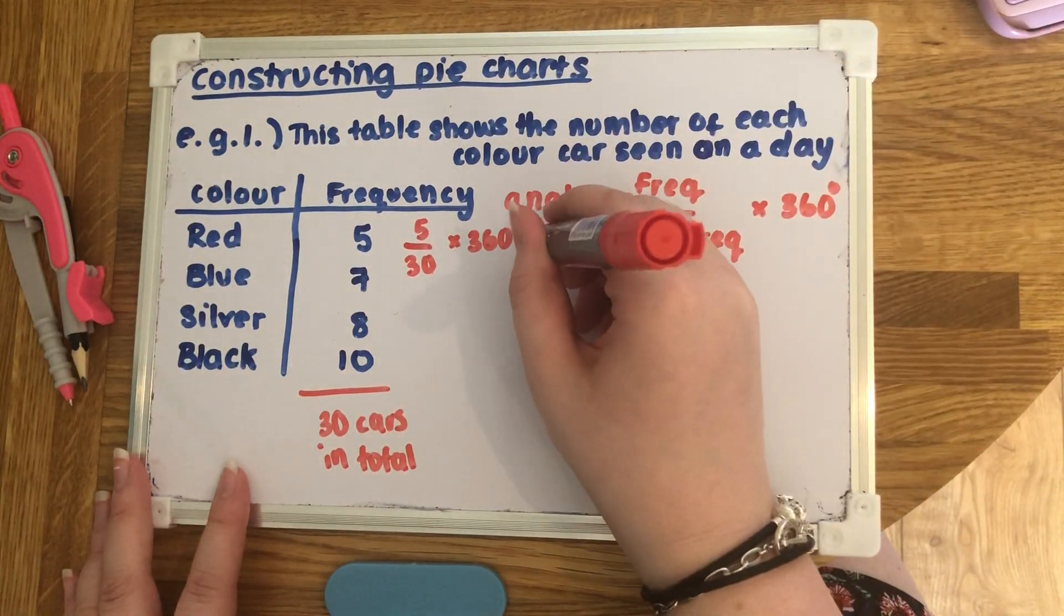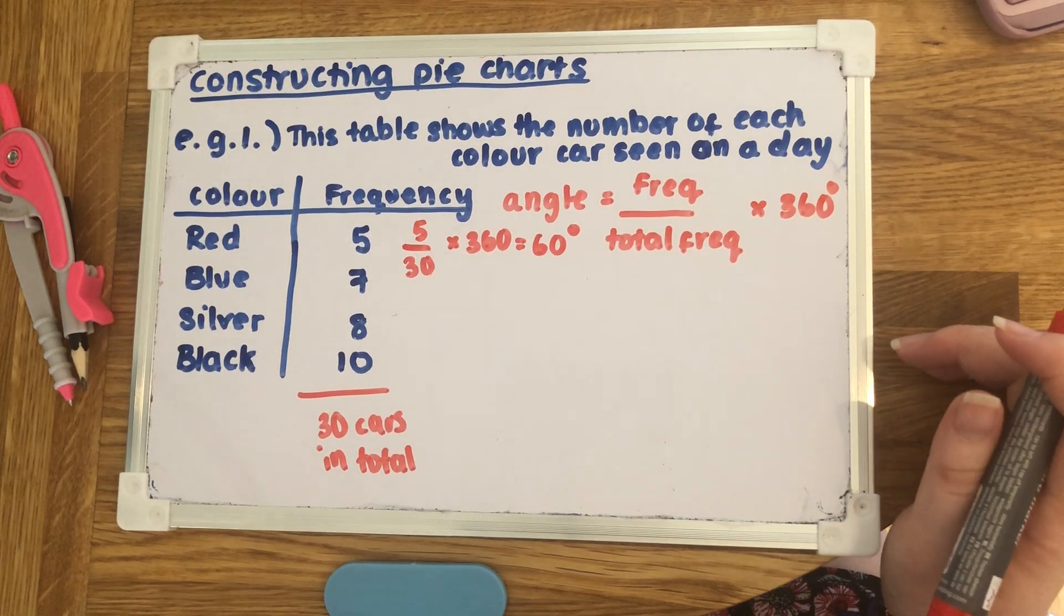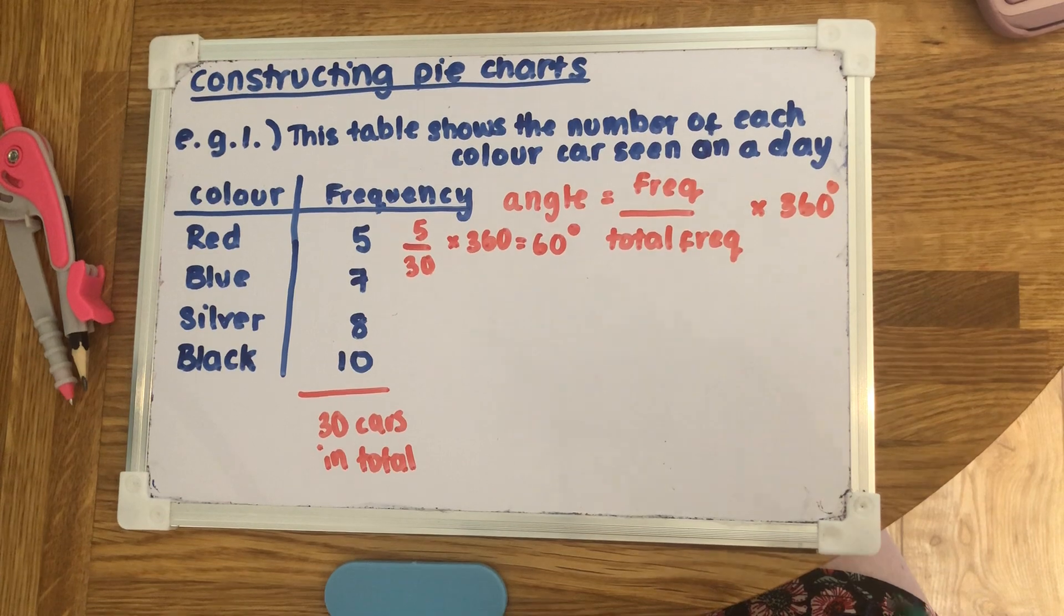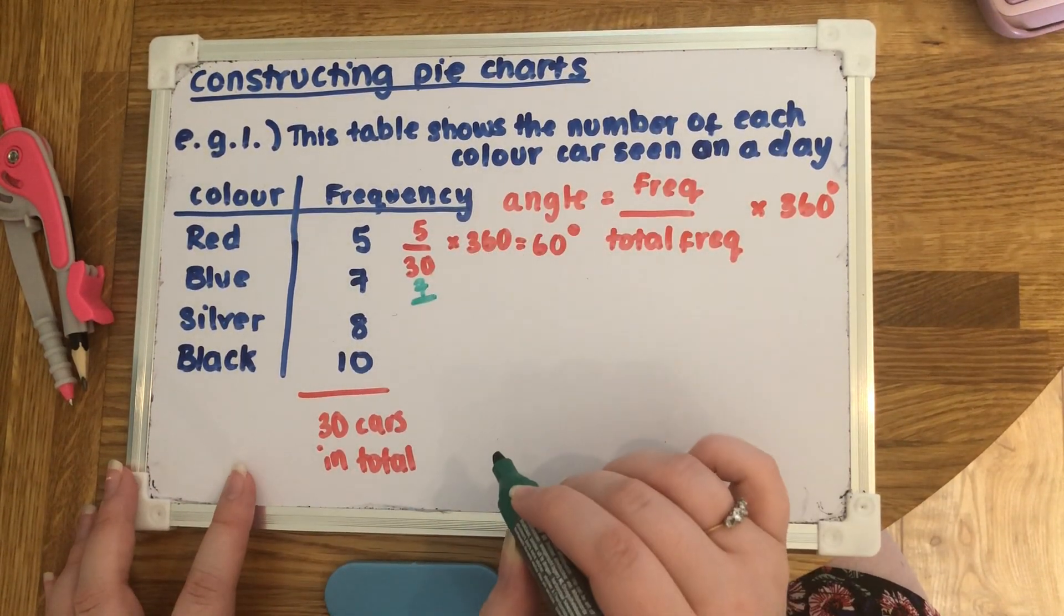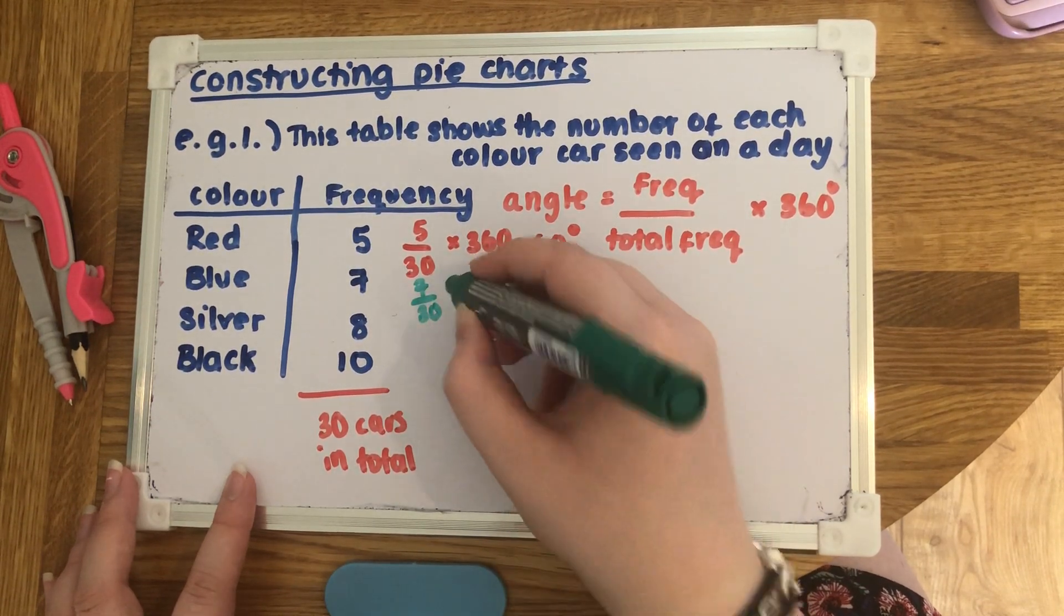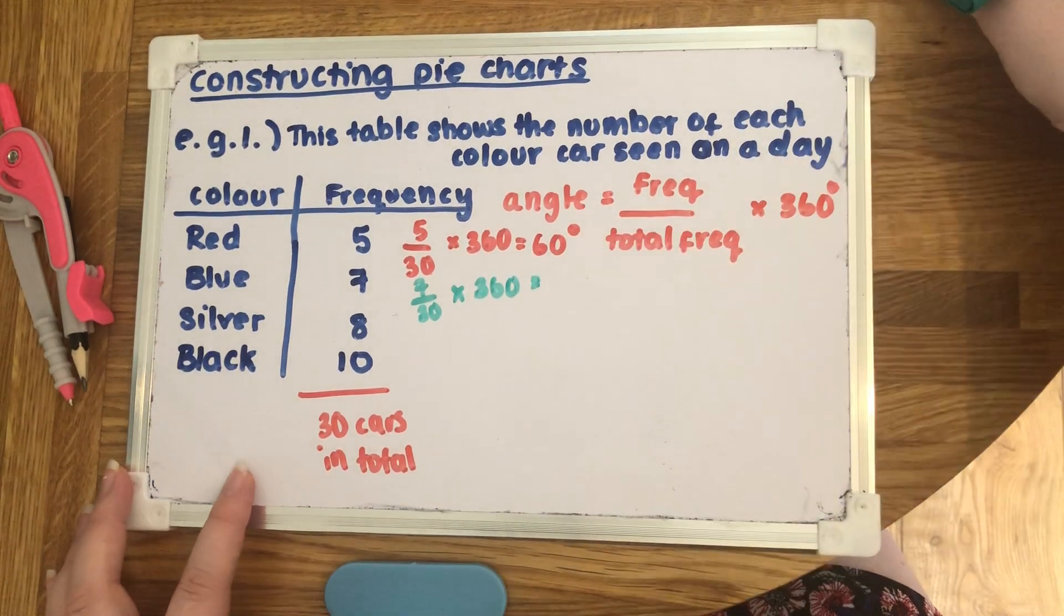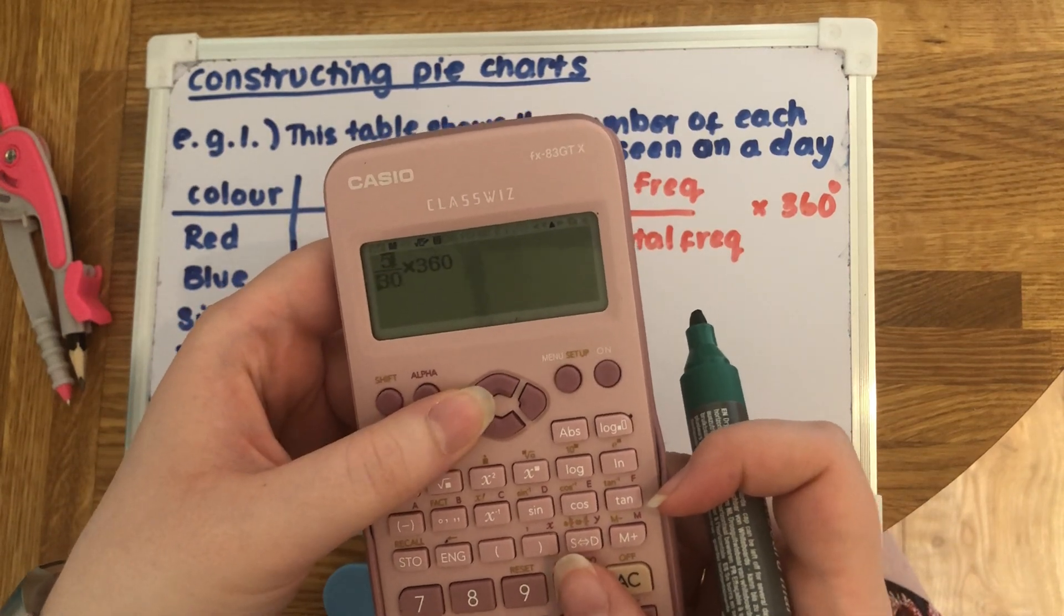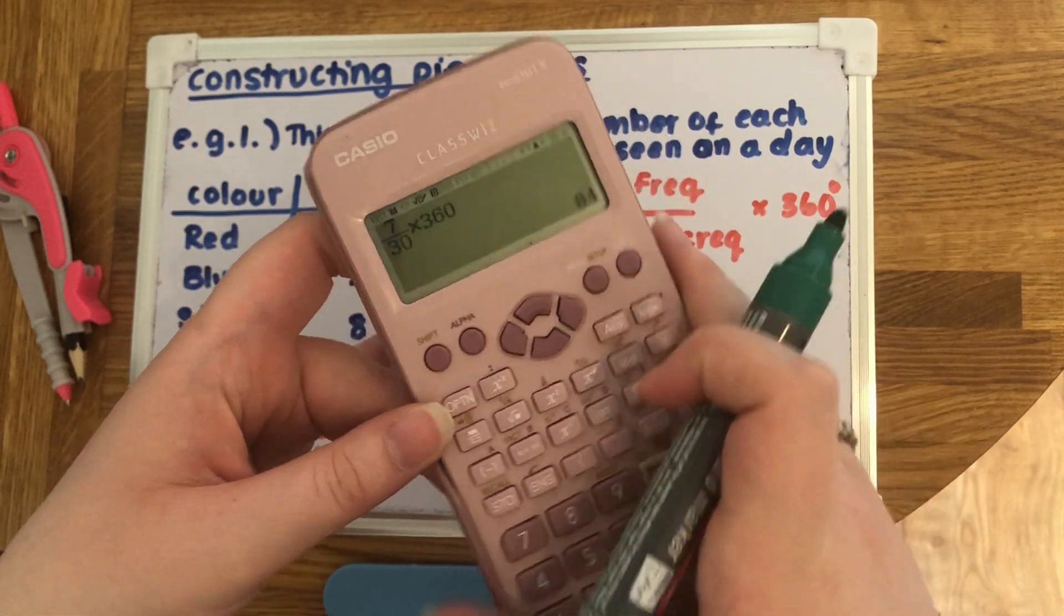We just do the same thing each time for all the colors. For the blue there was seven blues in total out of 30 cars, and we times that by 360. A bit of a cheat, if you just keep clicking the left hand button you can just change the top fraction number because that's the only bit that will actually change. That gives us 84 degrees.